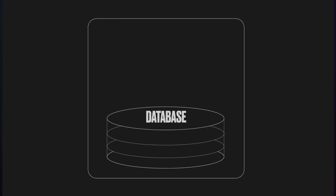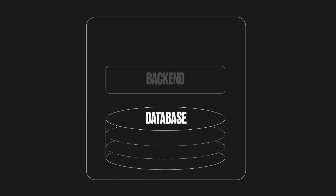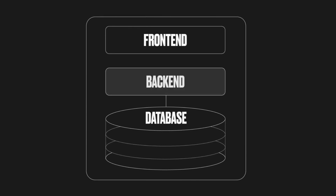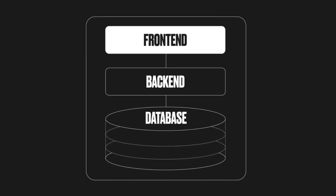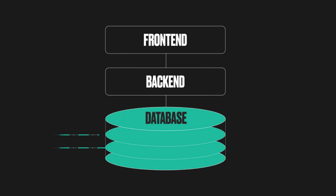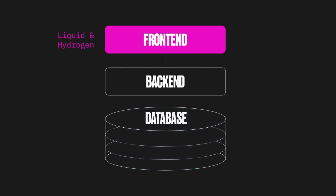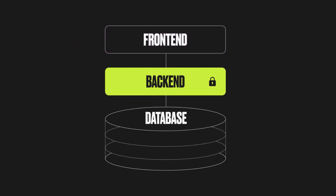So how does this all work? Here's your typical dev stack. State is managed in a database, application logic is implemented in the backend, and the presentation layer is implemented in the frontend. Historically, Shopify has made the database layer available through APIs and more recently has supported extending Shopify's data schema with metafields and metaobjects, and made the frontend extensible with Liquid and Hydrogen. The Shopify backend code has really been off limits.